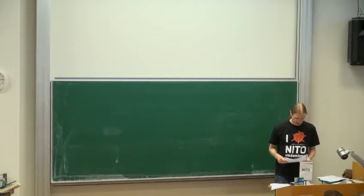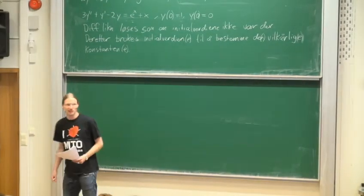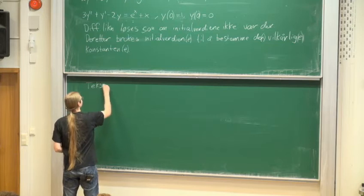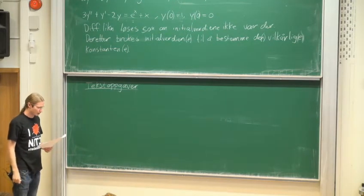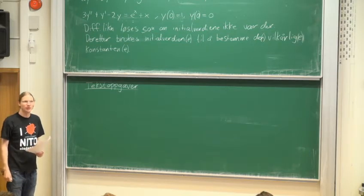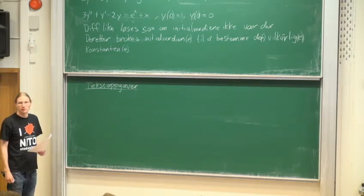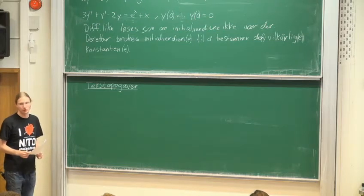Vi tar tekstoppgavene, for jeg tror det er den største utfordringen. Det er også det mest interessante, for det er da du bruker matematikken til å beskrive virkelige fenomener. Veldig mange interessante fenomener beskrives ved hjelp av at noe endres – for eksempel nesten alt i elektromagnetisme, masse differensialligninger der, fordi det elektriske feltet er lik noe med den deriverte av det magnetiske feltet. Med en gang du har derivasjon, har du en differensiallikning. Poenget er at for å beskrive situasjonen må man først sette opp, og så løse en differensiallikning.